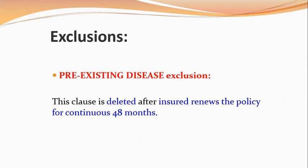Pre-existing disease has been defined by IRDA: any condition, treatment, or investigation that happened in the prior 48 months is called a pre-existing disease. If something happened related to an ailment — any investigation or treatment — in those 48 months, that is called a pre-existing disease and it will not be covered for 48 months after the inception of the policy.